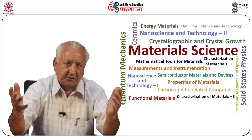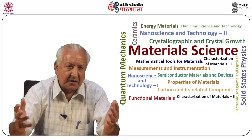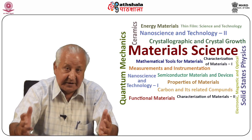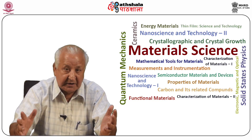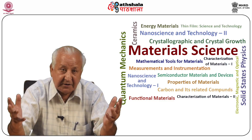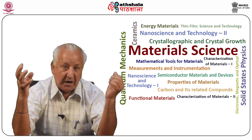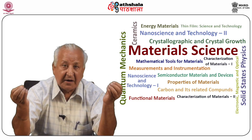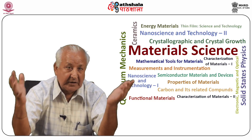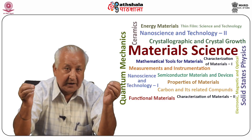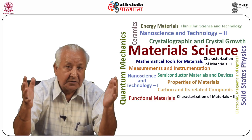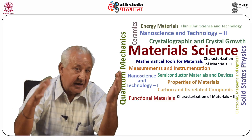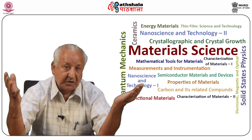The Bridgman-Stockburger techniques were originated by Bridgman in 1925 and Stockburger in 1938 and are named after them. In these techniques, a crucible containing the material to be grown is lowered through a furnace such that the lowest point in the crucible solidifies first and the solidification surface rises slowly up the crucible. The melt contained in the crucible is thus progressively frozen to yield a single crystal. The rate of lowering may range from about 0.1 to 200 mm per hour, but in most cases it is between 1 to 30 mm per hour.